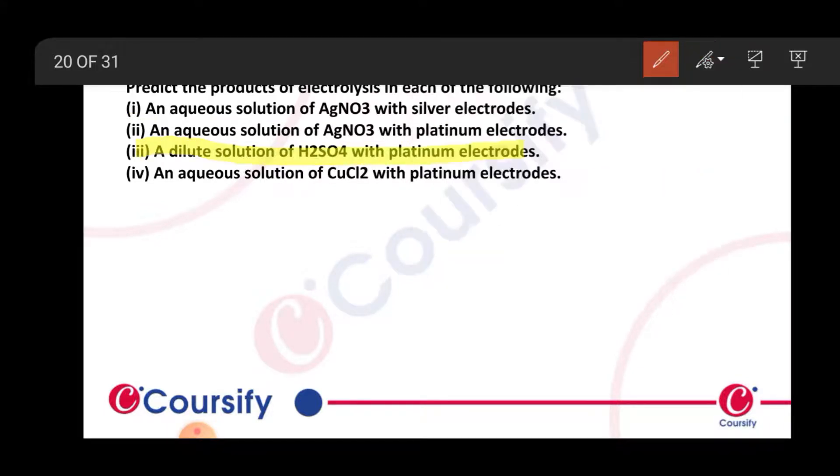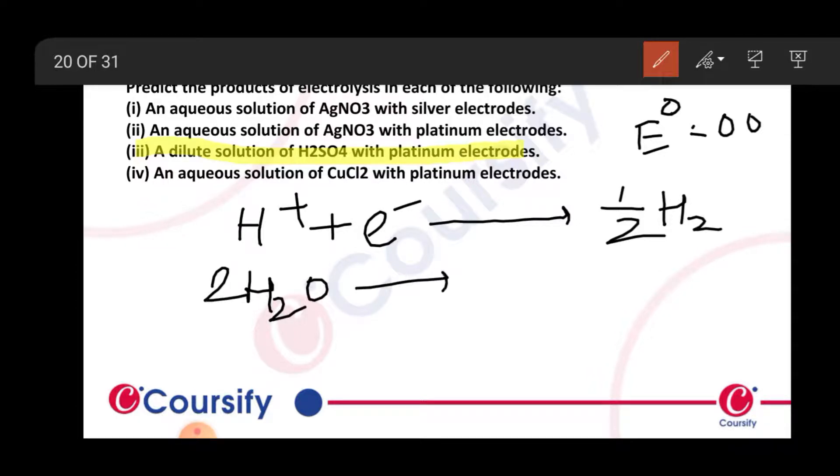Next, dilute solution of sulfuric acid with platinum electrodes. For sulfuric acid, H+ + e- → ½H2, so H2 liberation will occur. This is the reduction at the cathode with potential value 0.00. At the anode, consider the water reaction with E0 value...